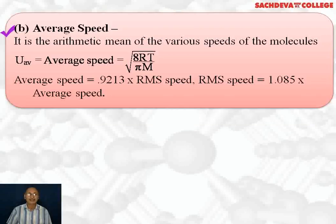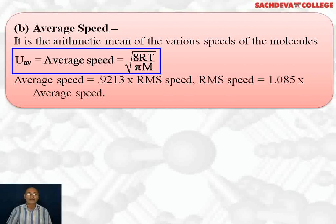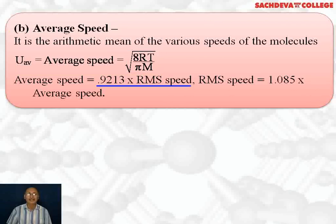Average velocity is the arithmetic mean of the various velocities of the molecules. Average velocity = √(8RT/Mπ). Average velocity is equal to 0.9213 times root mean square velocity, and root mean square velocity is equal to 1.085 or 1.086 times average velocity.